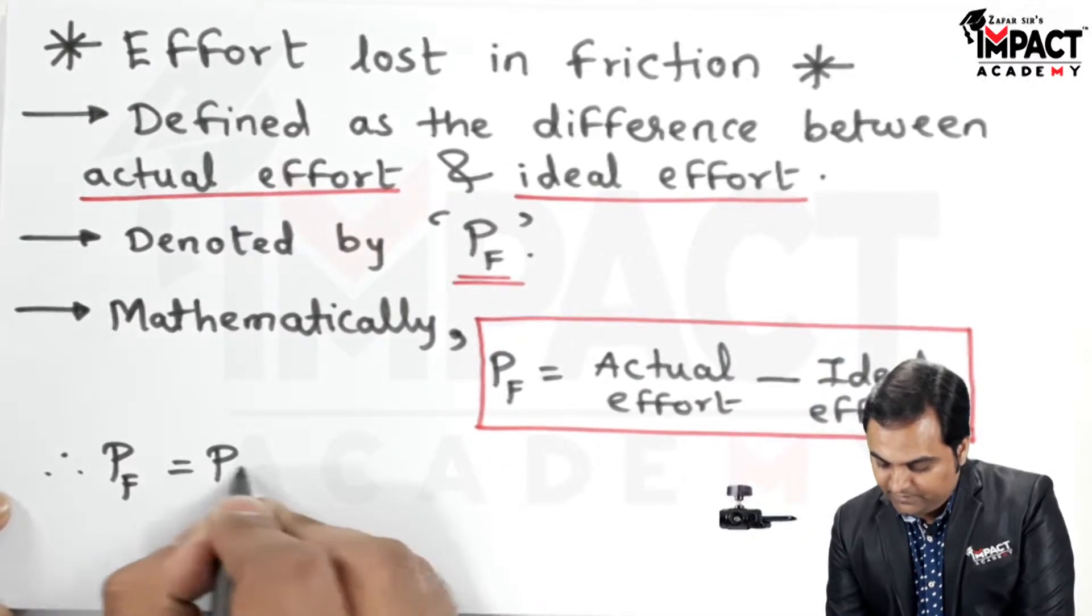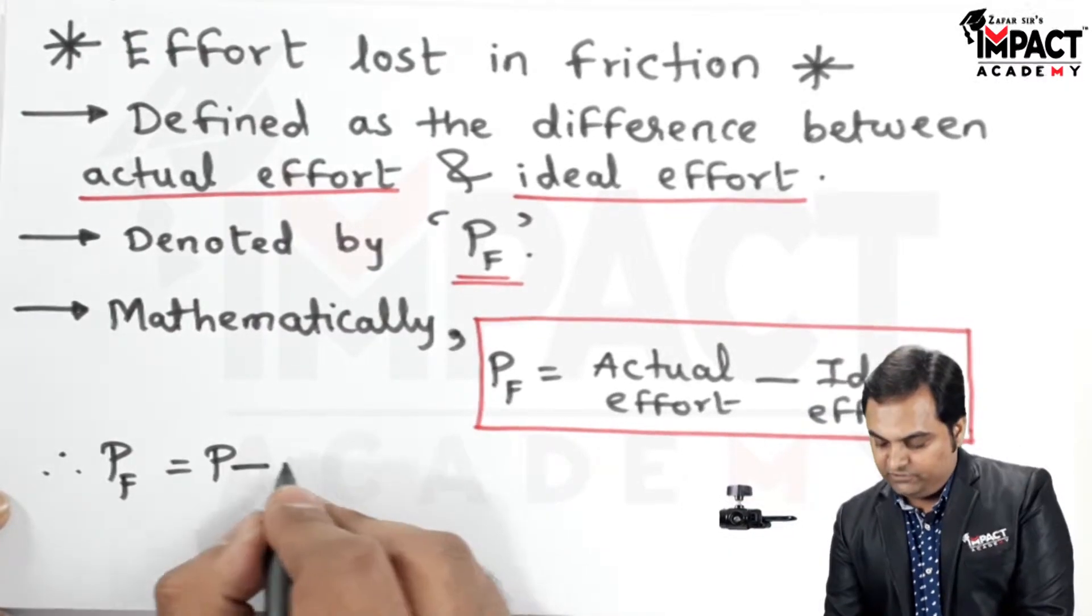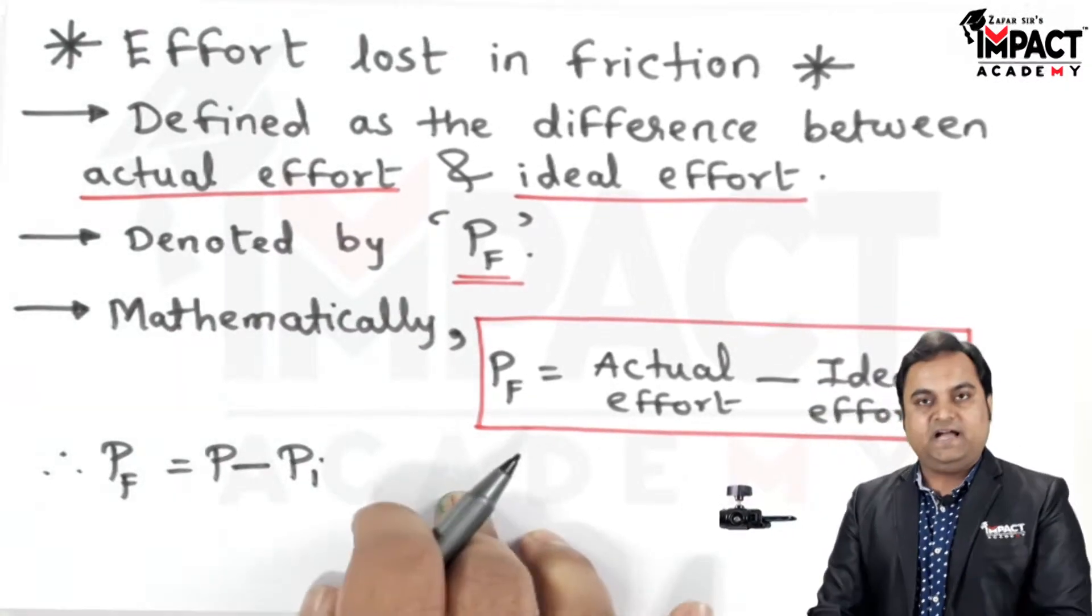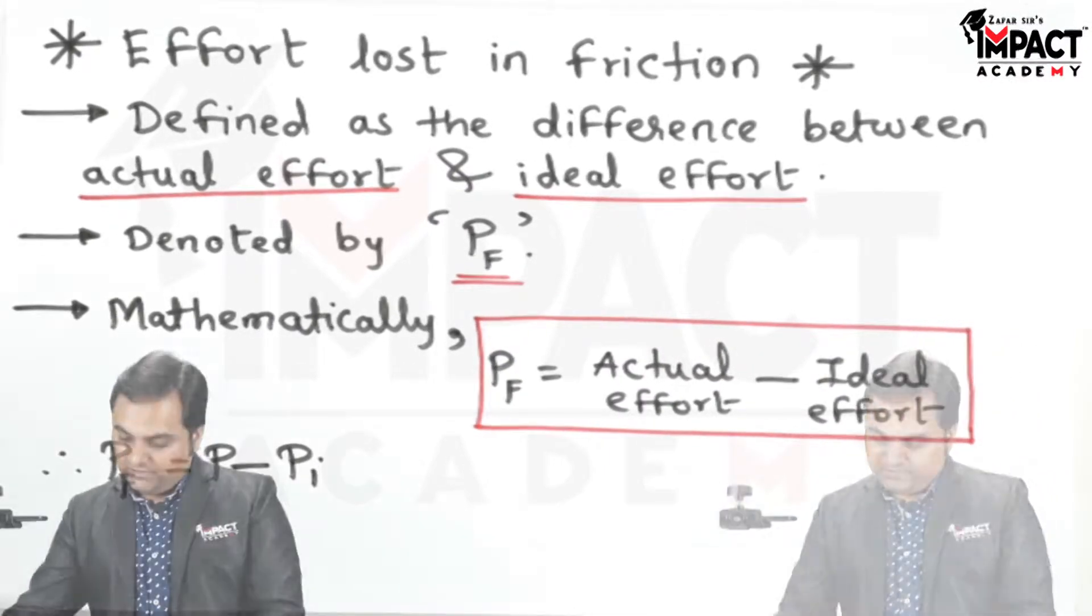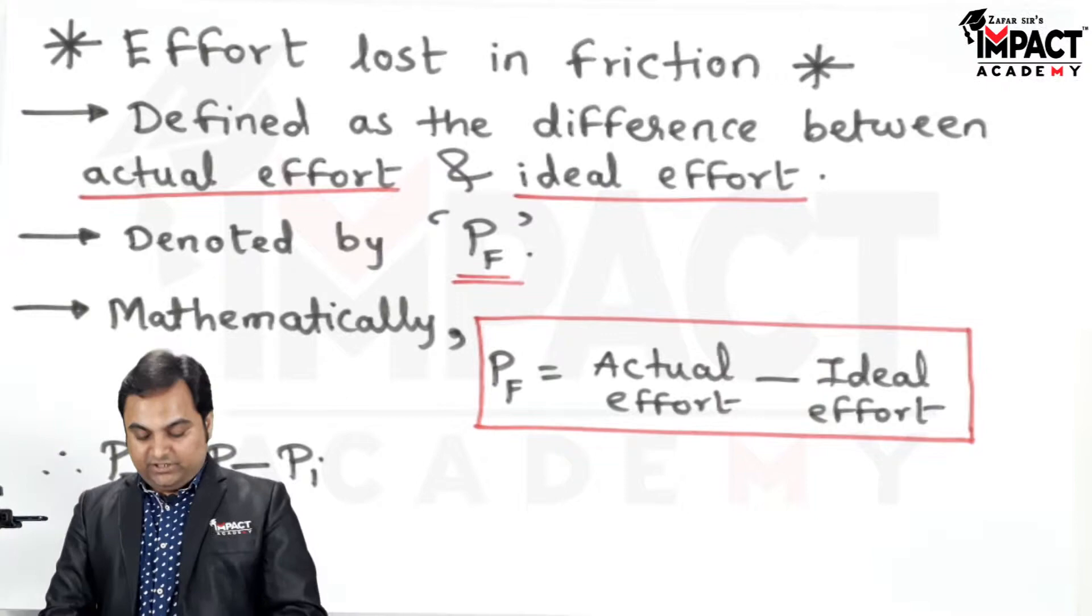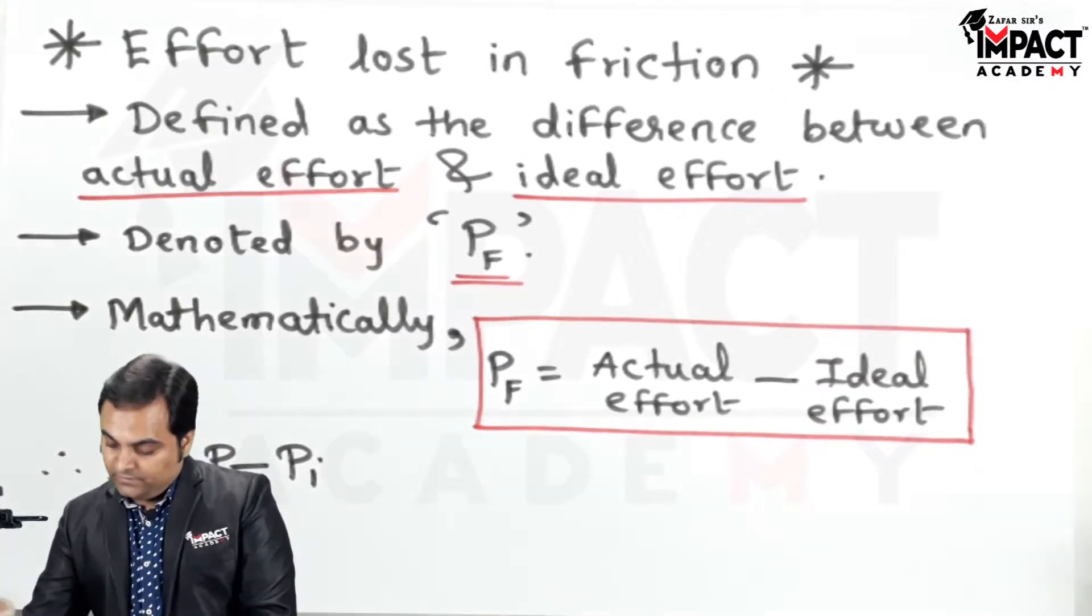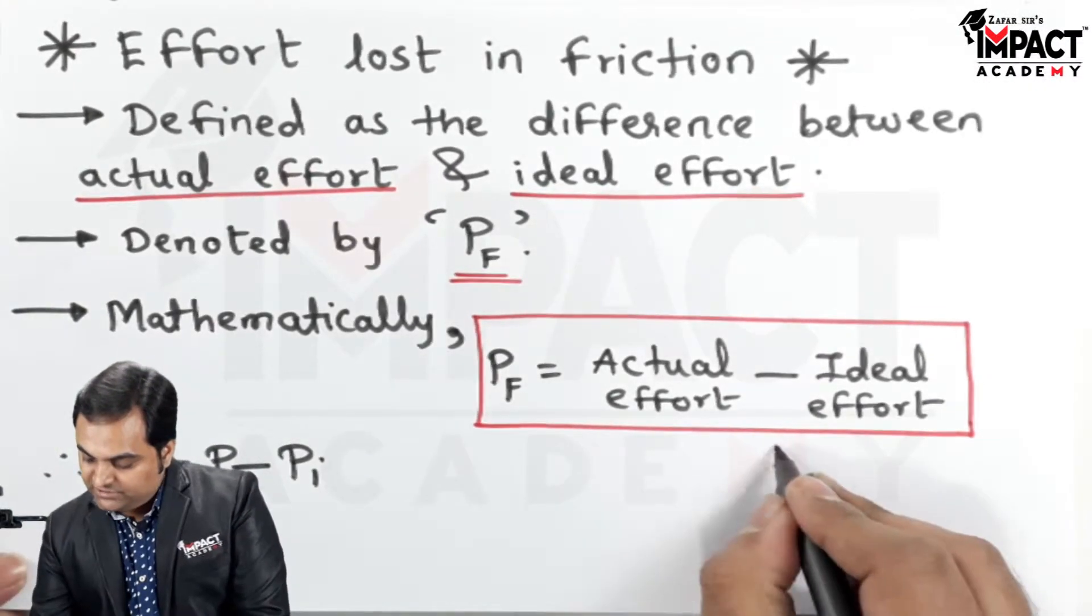Actual effort is denoted by P whereas ideal effort is denoted by P suffix I. This ideal effort is there in case of an ideal machine.